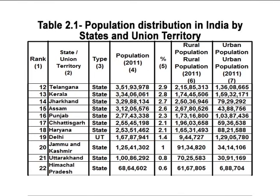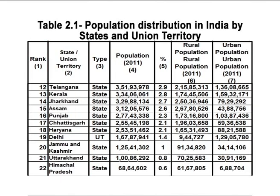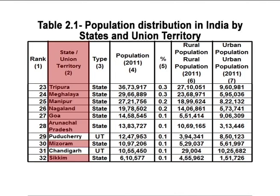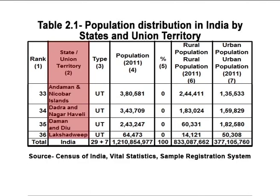Delhi has the most population among union territories, with a population of 1,67,08,941. Column 2 provides the names of states and union territories in India. There are 29 states including Uttar Pradesh, Maharashtra, Bihar, Madhya Pradesh, Tamil Nadu, Rajasthan, Karnataka, Gujarat, Andhra Pradesh, Odisha, Telangana, Kerala, Jharkhand, Assam, Punjab, Chhattisgarh, Haryana, Jammu and Kashmir, Uttarakhand, Himachal Pradesh, Tripura, Meghalaya, Manipur, Nagaland, Goa, Arunachal Pradesh, Mizoram, and Sikkim. The seven union territories are Delhi, Puducherry, Chandigarh, Andaman and Nicobar Islands, Dadra and Nagar Haveli, Daman and Diu, and Lakshadweep. Column 3 represents whether the entity is a state or union territory.